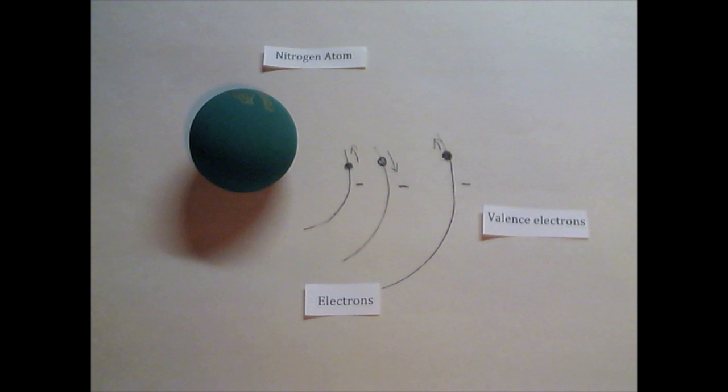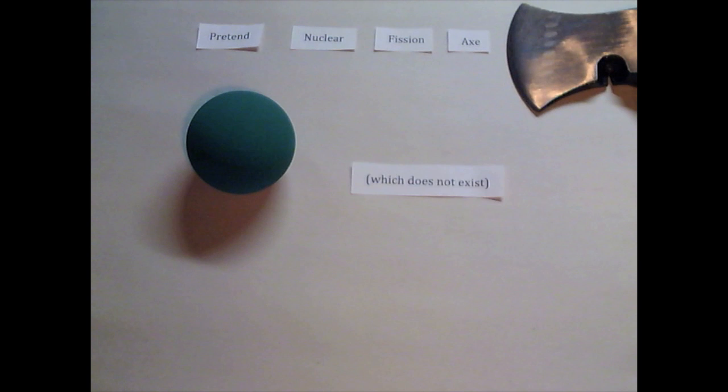Let's imagine that the outside of this racquetball is the valence shell of a nitrogen atom. Now let's pretend we have a nuclear fission axe, which of course does not exist, that we can cut this atom in half with to see the inside.